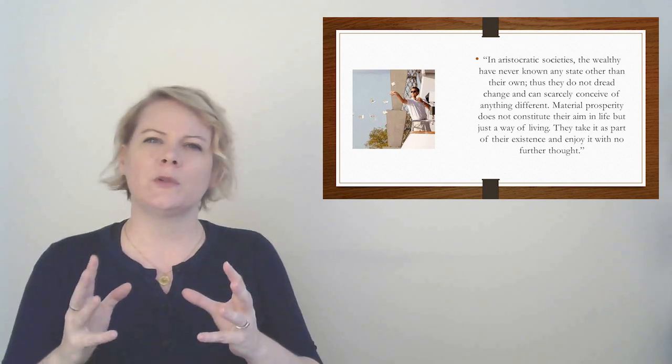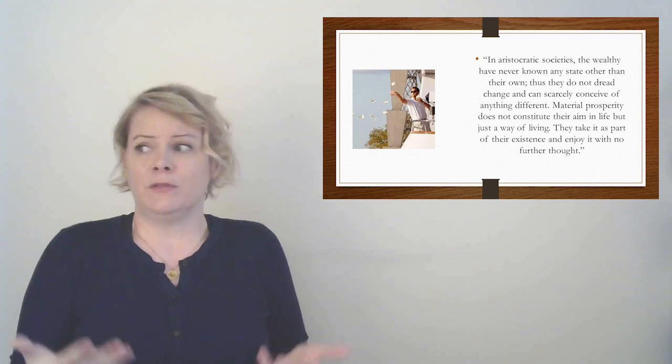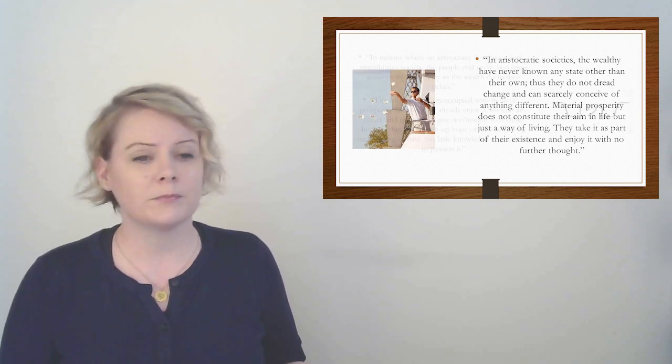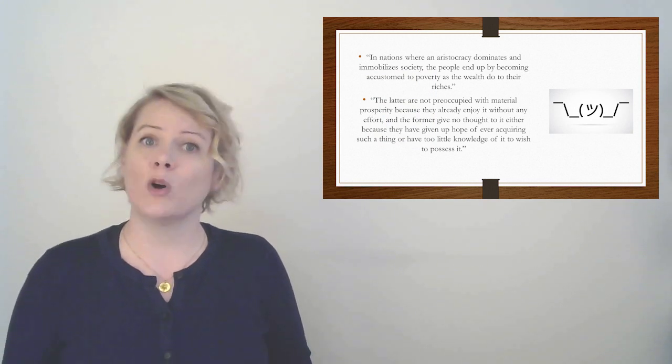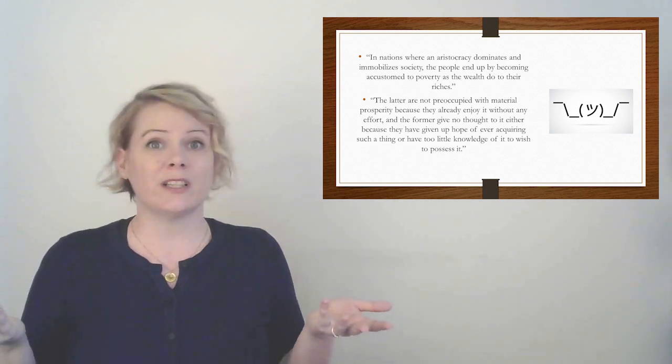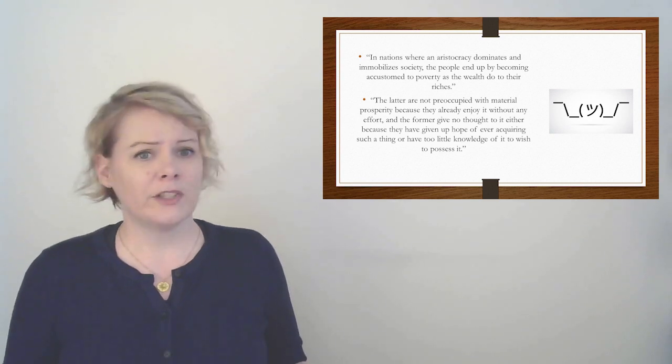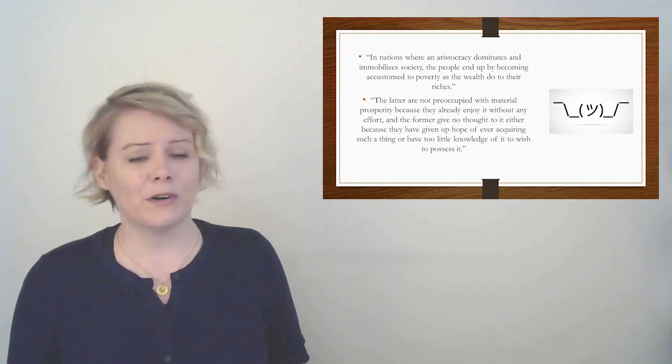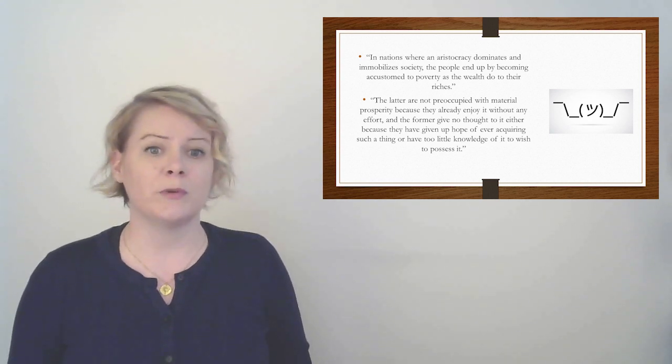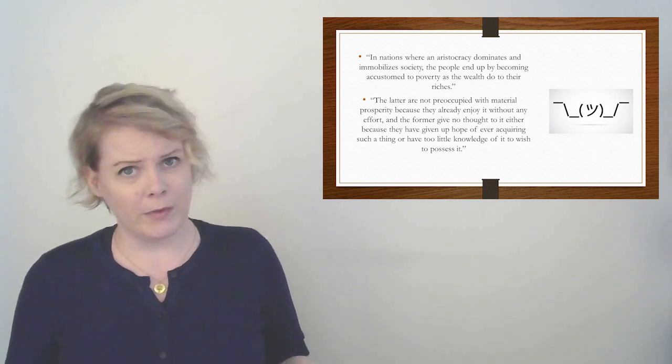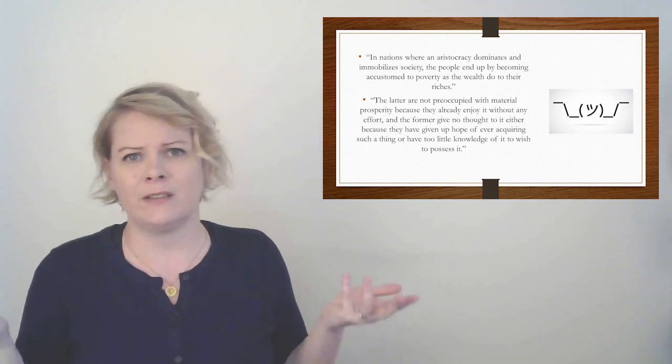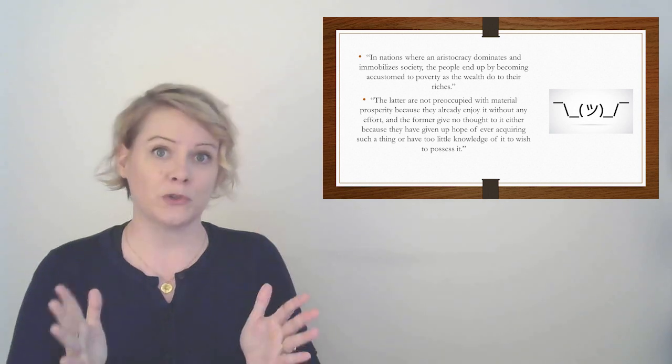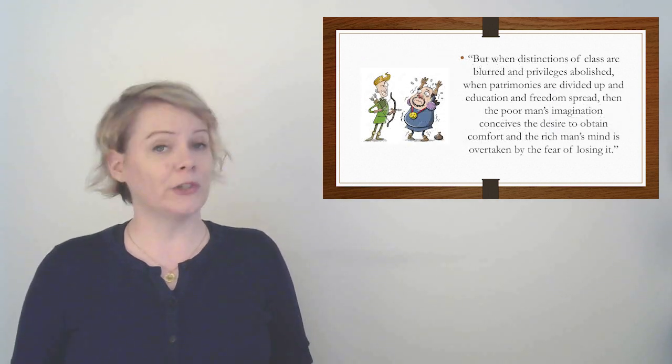In aristocratic societies, the wealthy have never known any state other than their own. Thus, they do not dread change and can scarcely conceive of anything different. Material prosperity does not constitute their aim in life, but just a way of living. They take it as part of their existence and enjoy it with no further thought. So he's like, the way that Americans are obsessed with their money is way different than the way that aristocrats are just not obsessed with their money. They've never been poor. They've never been anything but this. So they don't worry about it. If you have a lot of something, and you've always had a lot of something, you just don't think about it that much.